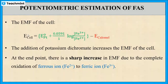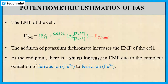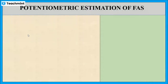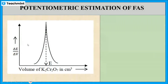At the end point, there is a sharp increase in EMF due to the complete oxidation of ferrous ions to ferric ions — that is, Fe²⁺ to Fe³⁺ — and hence a sharp increase in EMF occurs. By plotting ΔE/ΔV versus volume of potassium dichromate (in cm³), we get a curve from which we can determine the equivalence point.